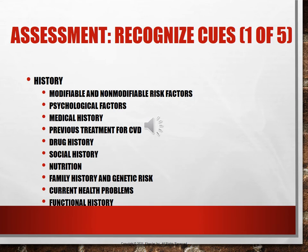Family history is hugely important in cardiovascular disease. A patient may exercise regularly, not smoke, and not be diabetic, but with a strong family history, they will very likely end up in the cath lab at some point in their life.